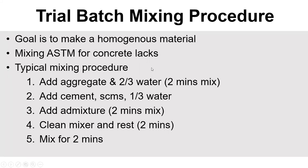After scaling down the math, you'll follow a trial batch mixing procedure. Batch out all your weights — maybe use buckets — and put the rock, sand, cement, and water together. Admixtures go into syringes or beakers. The goal is to make everything homogeneous without causing weird reactions with how chemical admixtures are added. The ASTM standard for mixing procedure could use more work, but there is a common procedure most places use.